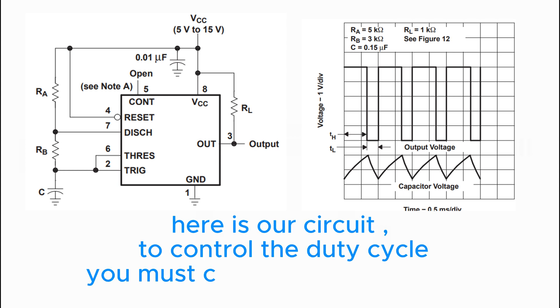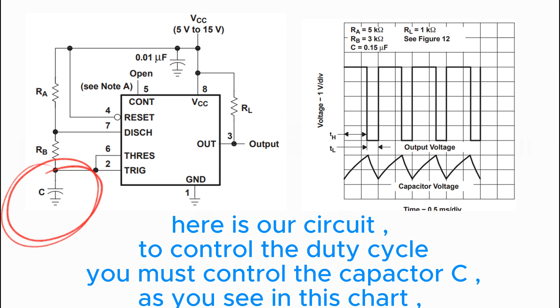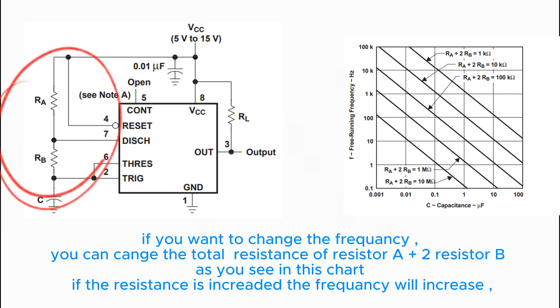This is our circuit. To control the duty cycle, you must control capacitor C. As you can see in this diagram, if you want to change the frequency, you can change the total resistance of resistor A plus 2 resistor B, as you see in this chart. If the resistance is increased, the frequency will increase.